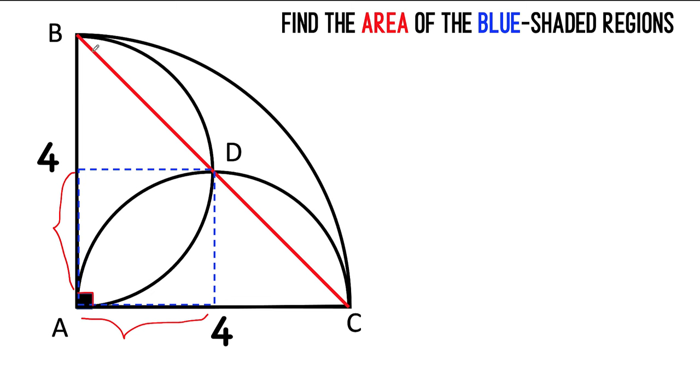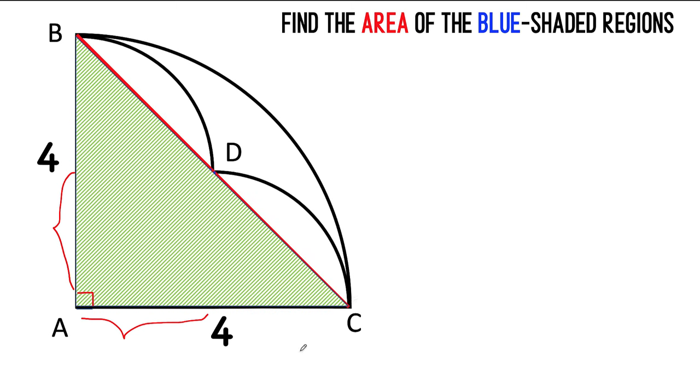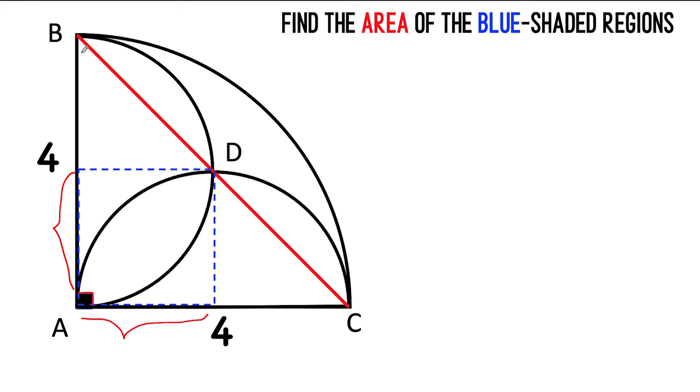Then, let's connect point B and point C, and we form this right triangle. Now the two sides of this right triangle are both four units, so we have here an isosceles right triangle, which means that the angle here is 45 degrees and the other base angle here is also 45 degrees.